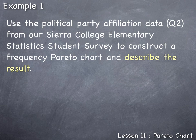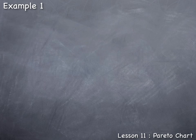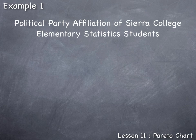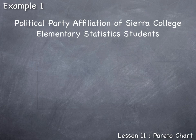To begin, whenever constructing any graphical method, we need a title. The title needs to describe both the data — in this case, political party affiliation — and the population from which the sample is collected — in this case, Sierra College elementary statistics students. So a title for our Pareto chart could be: "Political Party Affiliation of Sierra College Elementary Statistics Students."